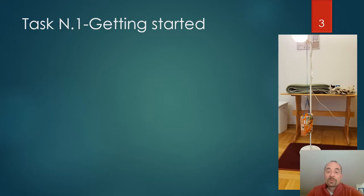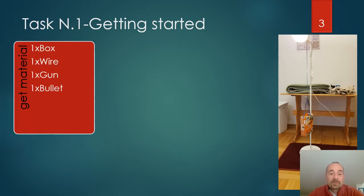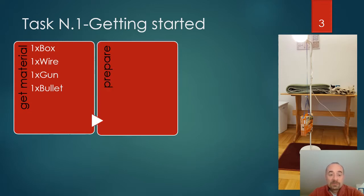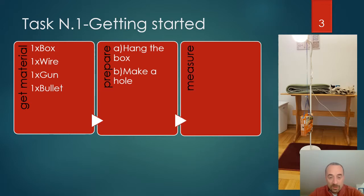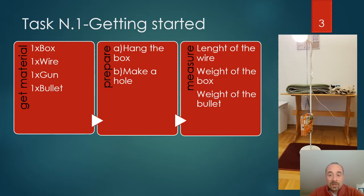What we need to do is prepare the material made of a box, a wire, a gun, and a bullet. First, we hang the box by means of the wire and we make a hole in the box, and we measure the length of the wire, the weight of the box, and the weight of the bullet.